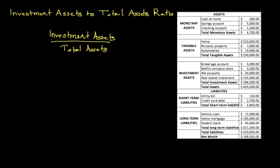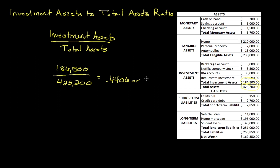To find the variables, we have investment assets of $186,500, and our total assets one line below are $423,200. If you divide $186,500 by $423,200, we get a financial ratio of 0.4406, or converting it to a percentage, it's in excess of 44 percent.